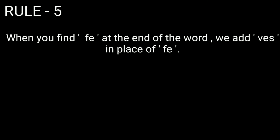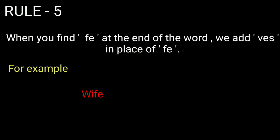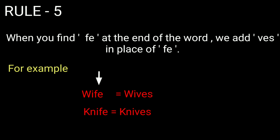Rule five: when you find 'fe' at the end of a word, remove 'fe' and add 'ves' to make it plural. For example, wife becomes wives, knife becomes knives, and strife becomes stripes. Hope you liked it, thank you so much.